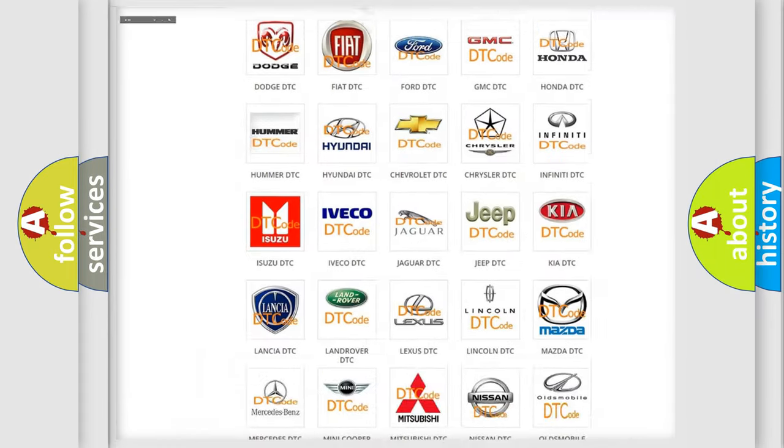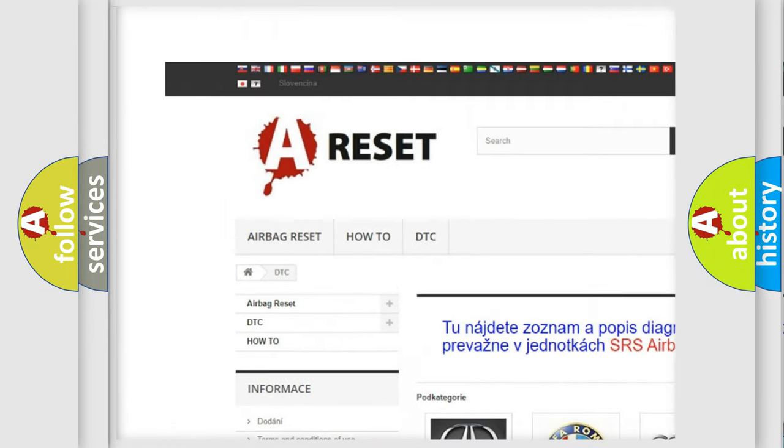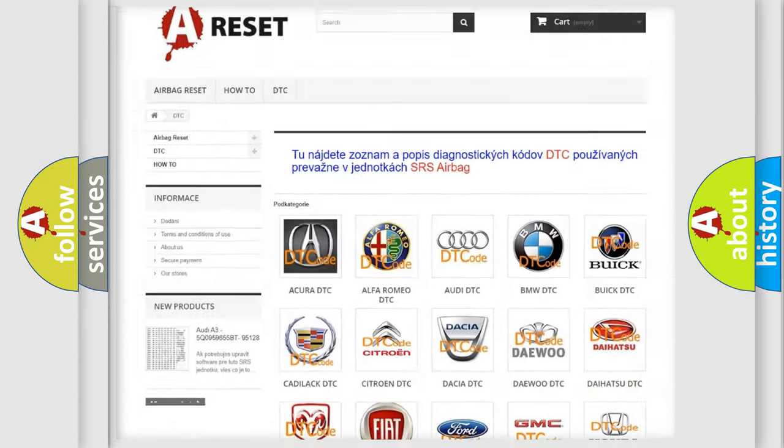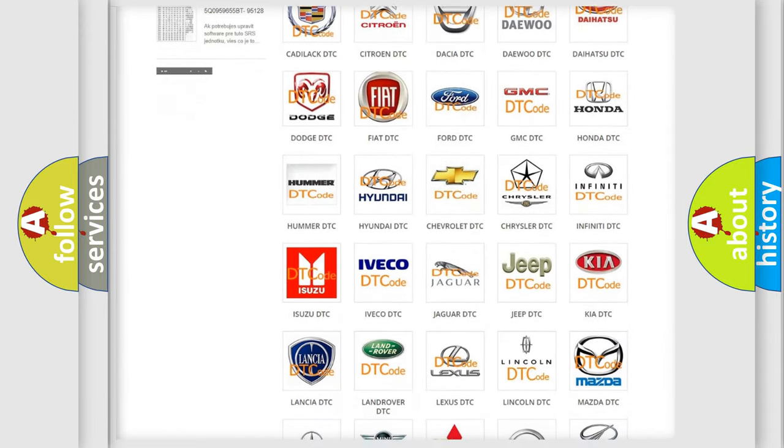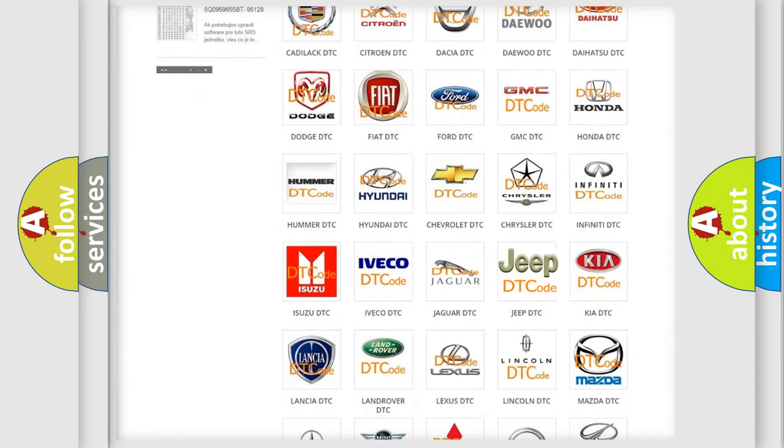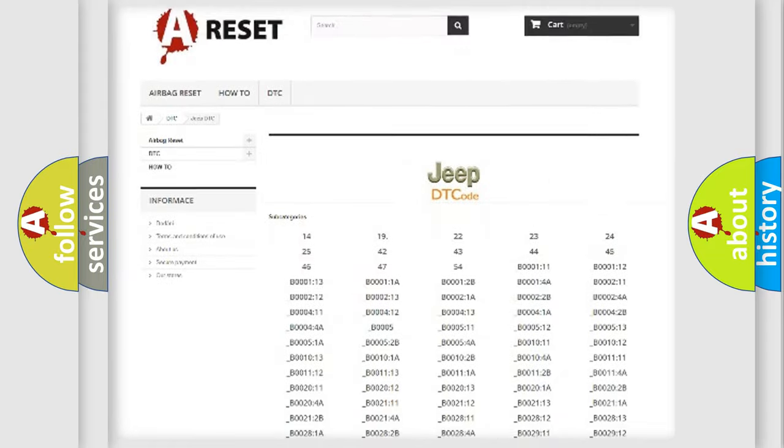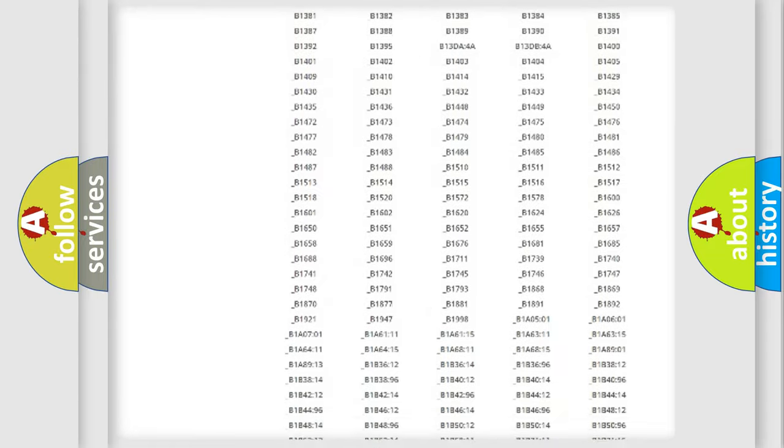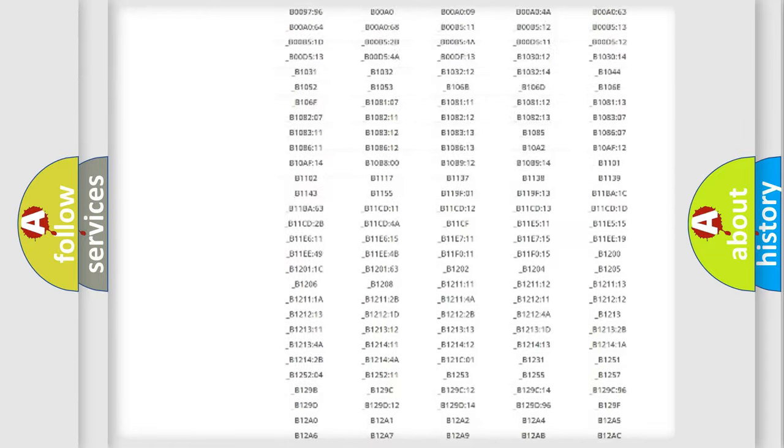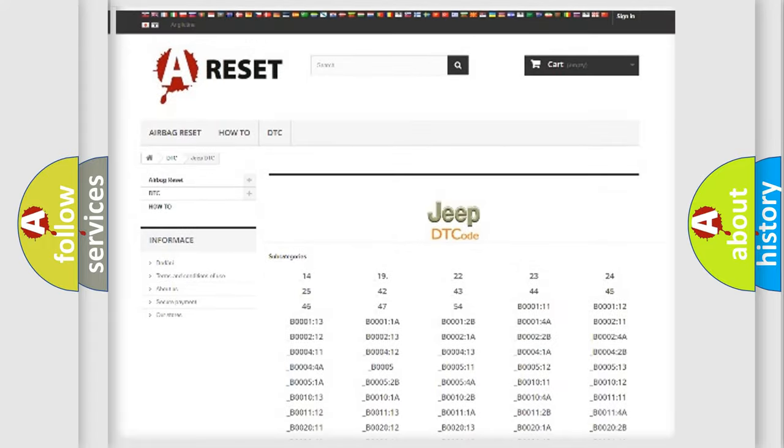Our website airbagreset.sk produces useful videos for you. You do not have to go through the OBD2 protocol anymore to know how to troubleshoot any car breakdown. You will find all the diagnostic codes that can be diagnosed in Jeep vehicles.